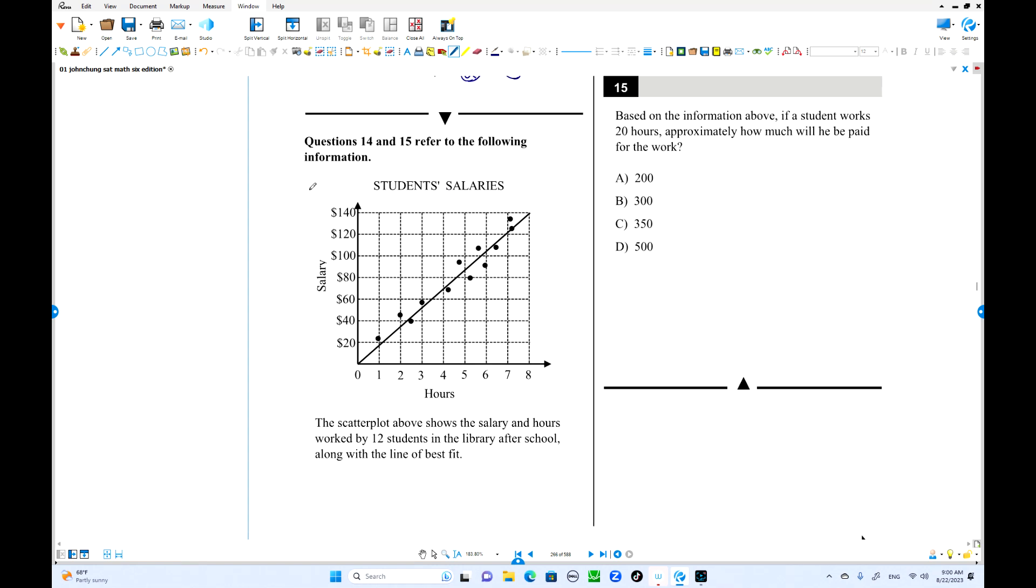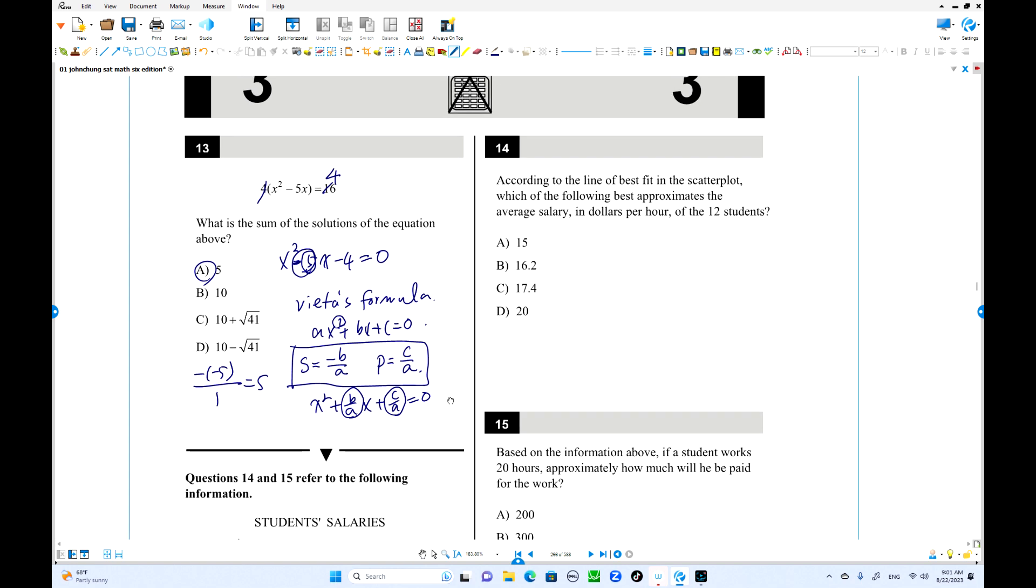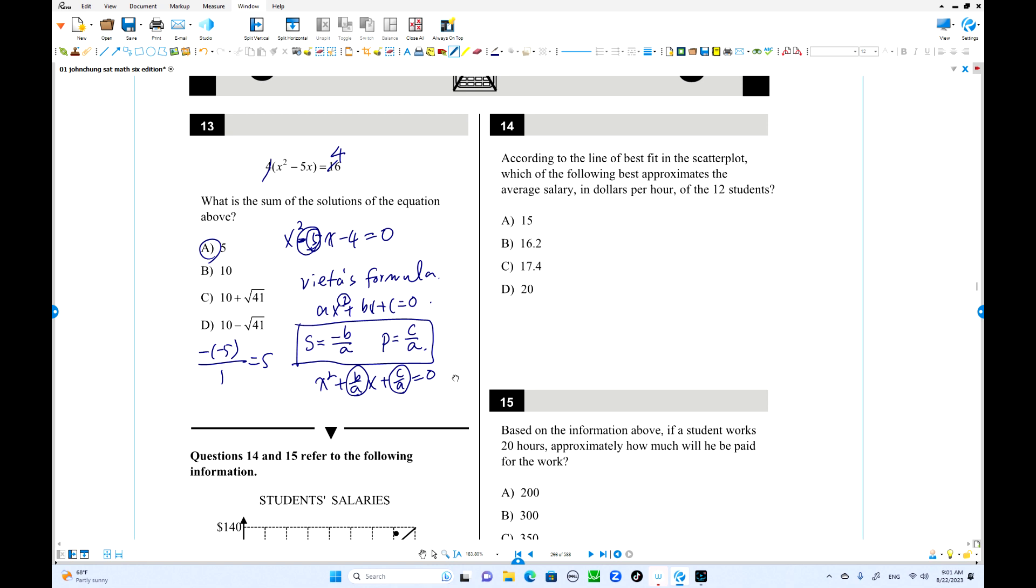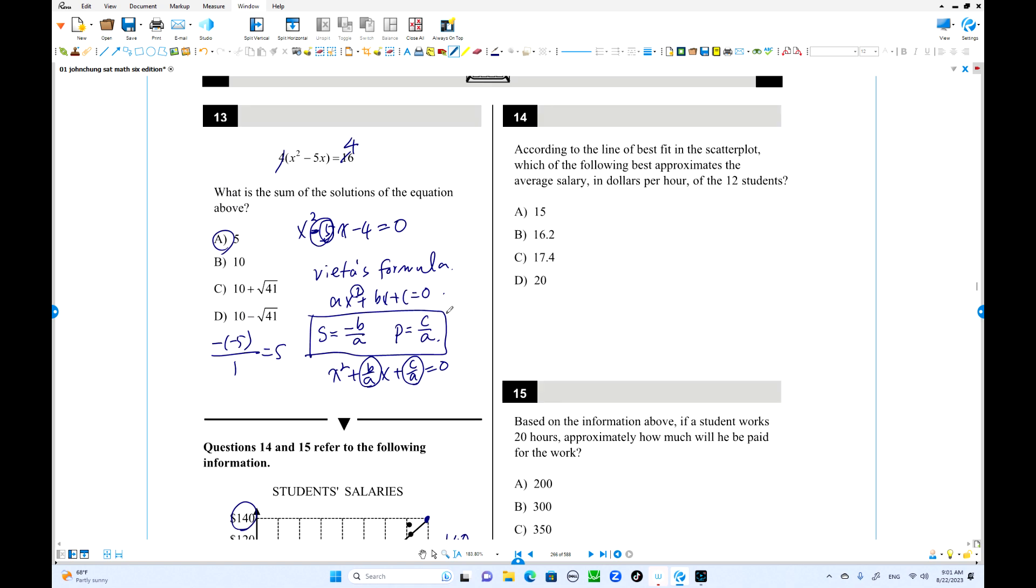Okay, we have student salaries. Scatter plot shows the salary and hours over 12 students in library. So we have a line of best fit there. That is linear, right? We pass through the origin over here. So according to the line of best fit, which of the following approximate average salary for 12 students? Because on the line of best fit, they are all, we use the point on this line. There is no y-intercept, we better use this one. So look. Eight hours, they charge the one. They paid $140. So one hour, 140 over 8, isn't it? So 140 over 8. How much is this one? 140 over 8. You can use it. 60. Yeah, 17.5 dollars. This is the best answer. Closest the numbers.